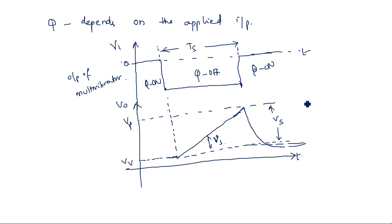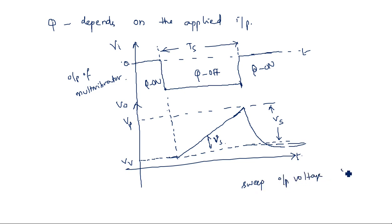This process will repeat, and ultimately we will have a sawtooth or sweep waveform — sweep output voltage using BJT, bipolar junction transistor.